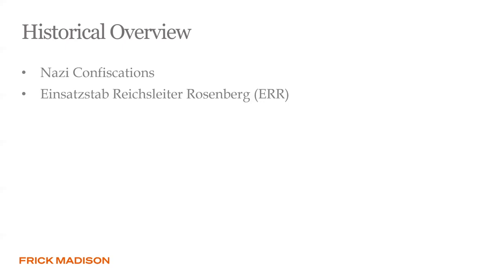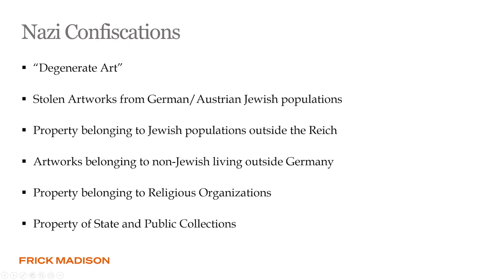Why did they plunder? There were several different reasons. They wanted to remove so-called degenerate art from Germany, which would either be burned or sold to acquire more money for the Nazi war machine. They also wanted to collect items that culturally documented enemies of the Reich, such as communists and Masons. They wanted to collect art for proposed initiatives such as the planned but never realized Führer Museum in Linz, Austria, which was to become the cultural center of the new Reich. And last but not least, they also wanted to plunder for use in private collections.